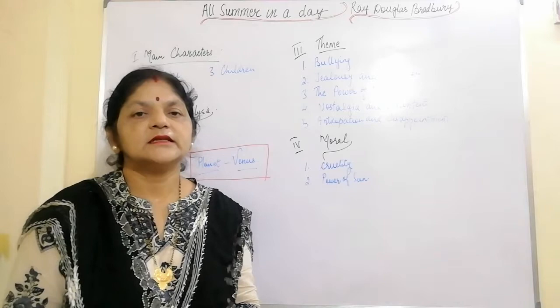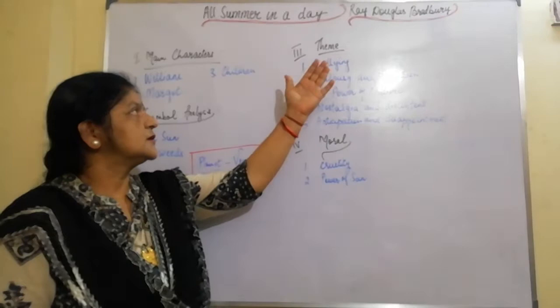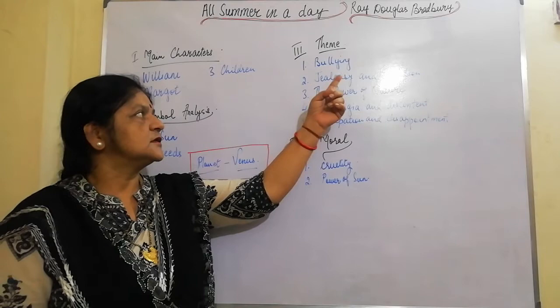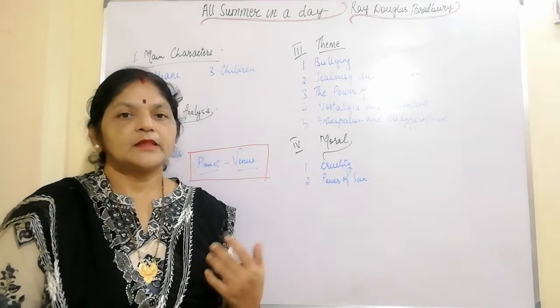Now, dear children, I'll tell you the themes of the story. The main themes of 'All Summer in a Day' by Ray Bradbury are: Number one, bullying, which is caused by jealousy and envy. The author chooses to explore this theme in the context of future generations that have a chance to travel between planets as a consequence of evolution. Number two, jealousy and isolation.